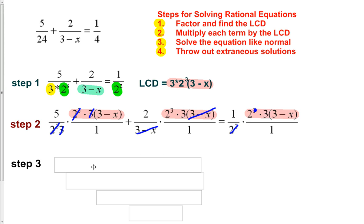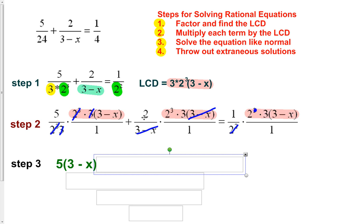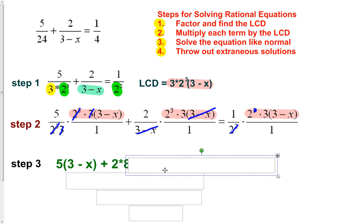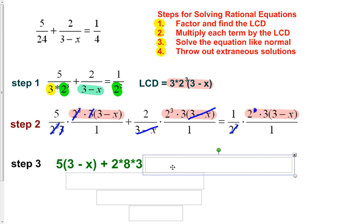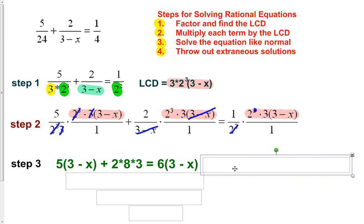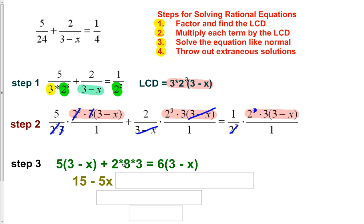Next, multiply out what we still have left. We have 5 times the leftover quantity 3 minus x, plus 2 times 8, which is 16 times 3. The 3 minus x went away on that term. On the other side, we have 2 times 3, which is 6 times the quantity 3 minus x. Continuing the algebra: 5 times the quantity gives us 15 minus 5x. 2 times 8 times 3 simplifies to 48. On the other side, distributing the 6: 6 times 3 is 18, and 6 times negative x is negative 6x.